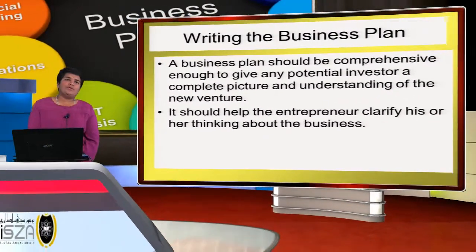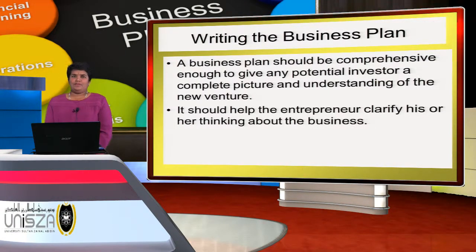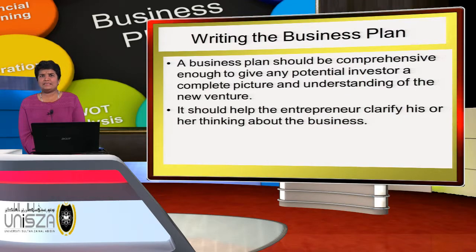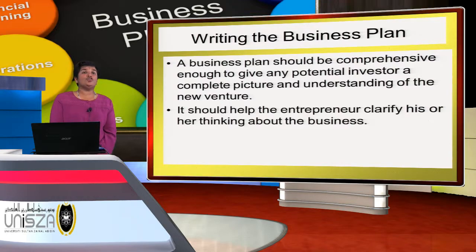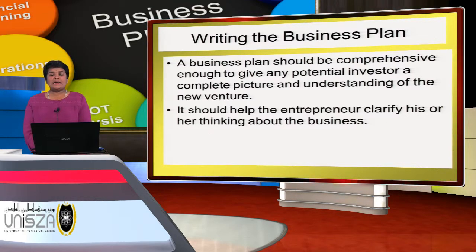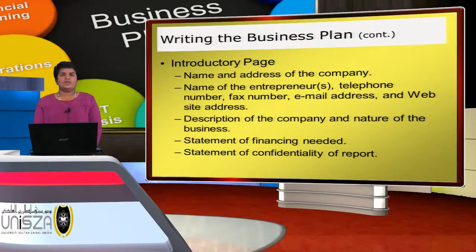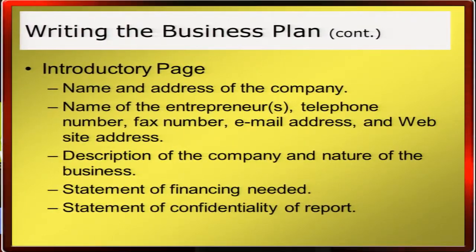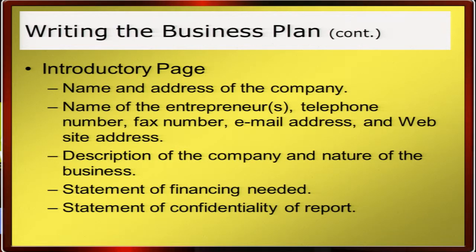Now let's look at how to write the business plan. A business plan should be comprehensive enough to give any potential investor or venture capitalist a complete picture and understanding of the new venture. The first page is the introduction page, where you include the name and address of the company, name of the entrepreneurs, telephone number, fax number, email address, and website address. Also include a brief description of the company and nature of the business, a statement of financing, and a statement of confidentiality of reports.